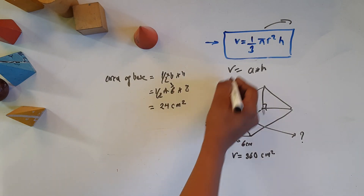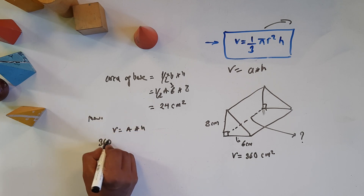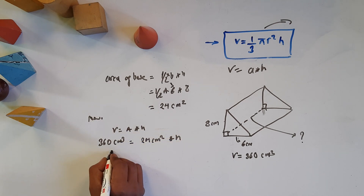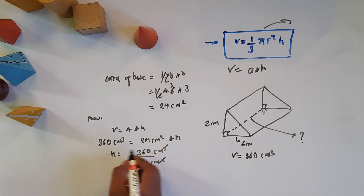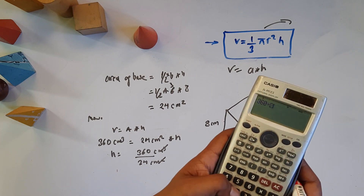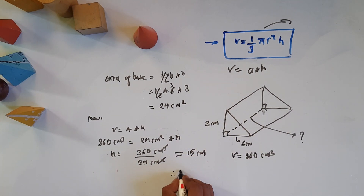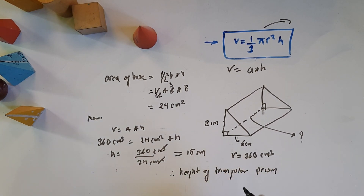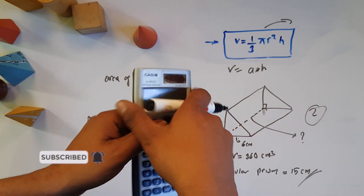Now we have to find the height. V equals area of base A into H. The volume is 360 cm cubed and the area of base is 24 cm squared. Therefore H equals 360 divided by 24 cm squared. So the height of the triangular prism is 15 cm.